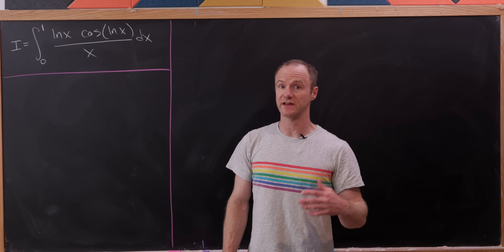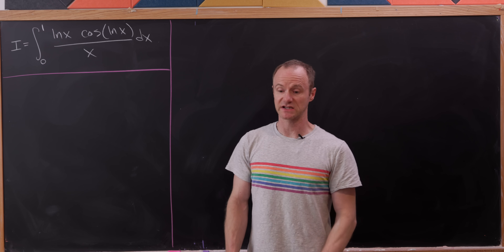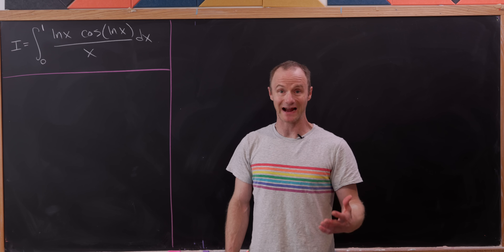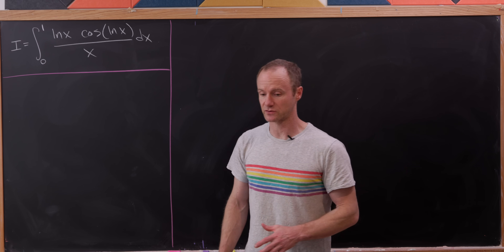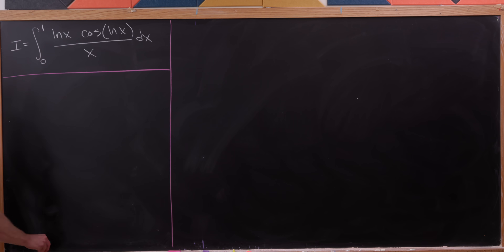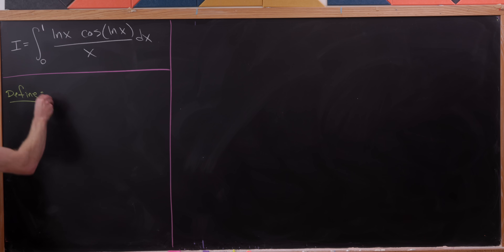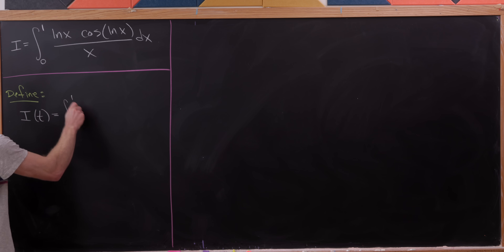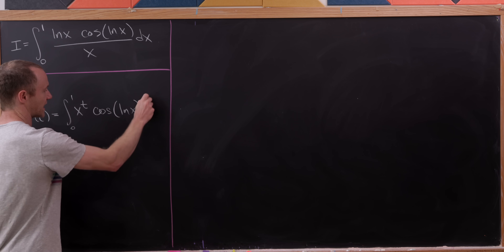We're going to evaluate this, or try to evaluate this, using a complicated method and then a simpler method as well. The complicated method is Feynman's trick, also called the Leibniz rule for differentiation under the integral sign. To do that, we need to define a function that looks like this integral but has a new parameter. We'll call this I(t), equal to the integral from 0 to 1 of x to the t times the cosine of the natural log of x dx.